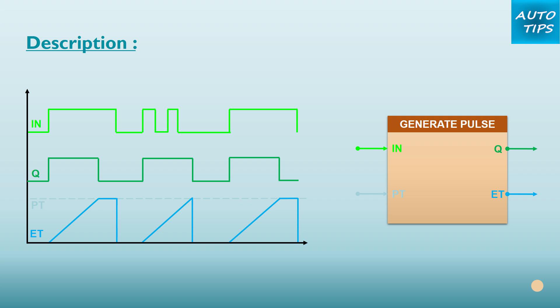The program time PT begins when the instruction starts. Output Q is set for the duration PT, regardless of the subsequent course of the input signal. While the time PT is running, the detection of a new positive signal edge at the IN input has no influence on the signal state at the Q output.